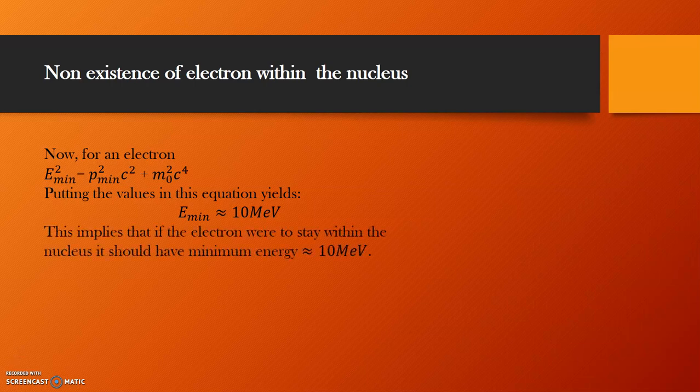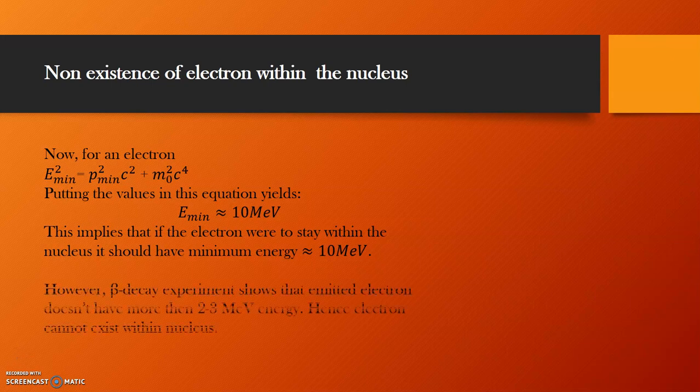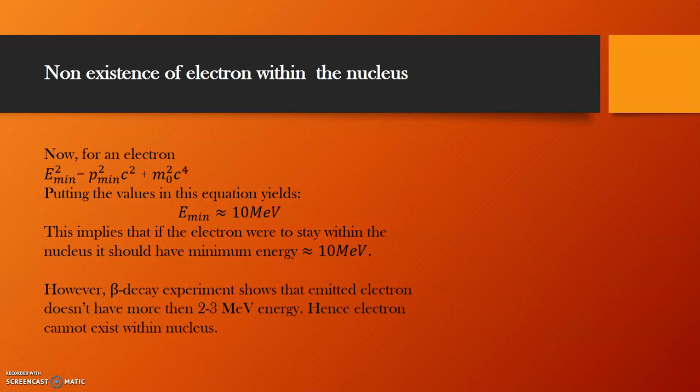So, if the electron were to stay within the nucleus, it should have minimum energy of 10 mega electron volts. However, what is seen in reality? Experiments like beta decay show that emitted electrons do not have more energy than 2 to 3 mega electron volts. And hence, electrons cannot exist within the nucleus.